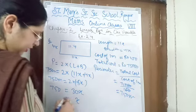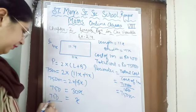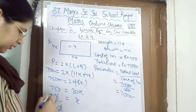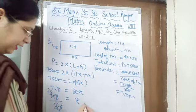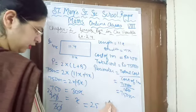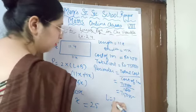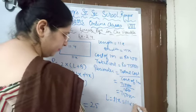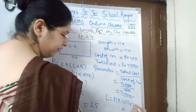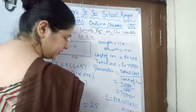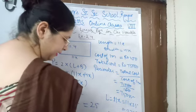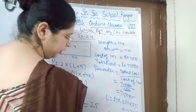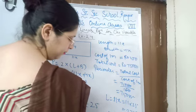So X remains, and 750 divided by 30 gives us X = 25. Therefore, length equals 11X = 11 into 25 = 275 meters. And breadth equals 4X = 4 into 25 = 100 meters. So these are the dimensions of the rectangular plot.